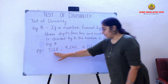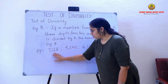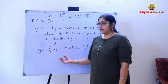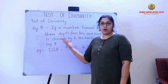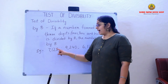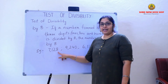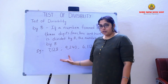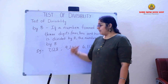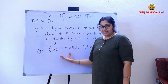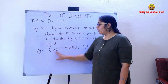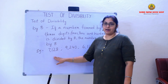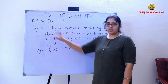The last three digits, 128, need to be checked against the 8 times table. If I can divide 128 by 8 exactly, without a remainder, then I can say that the whole number 7128 is divisible by 8.